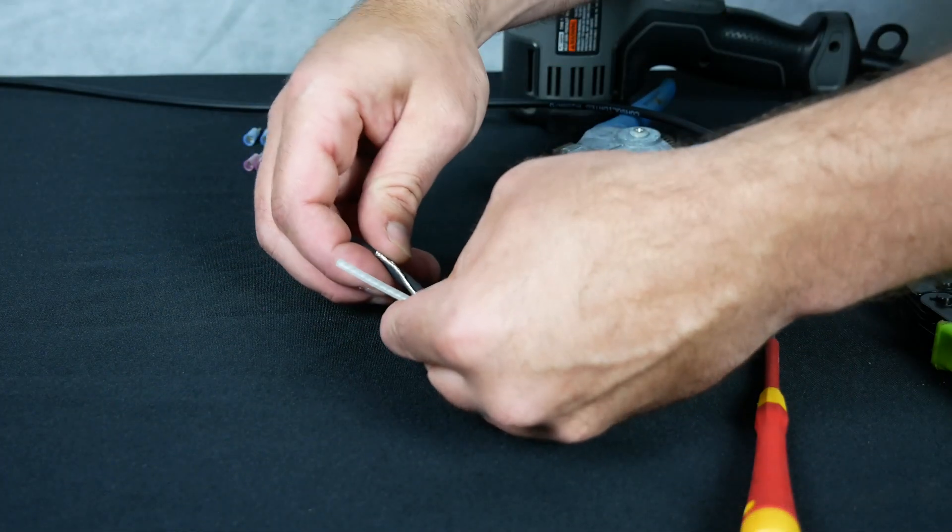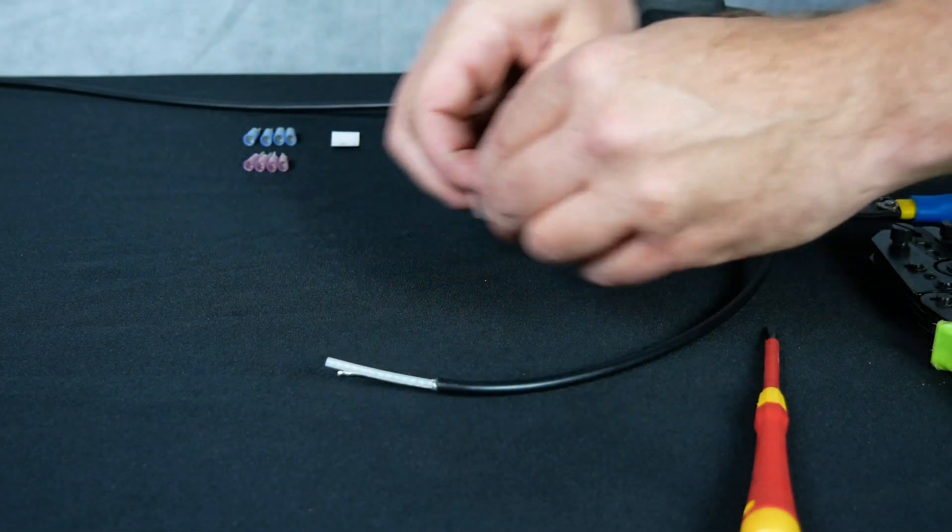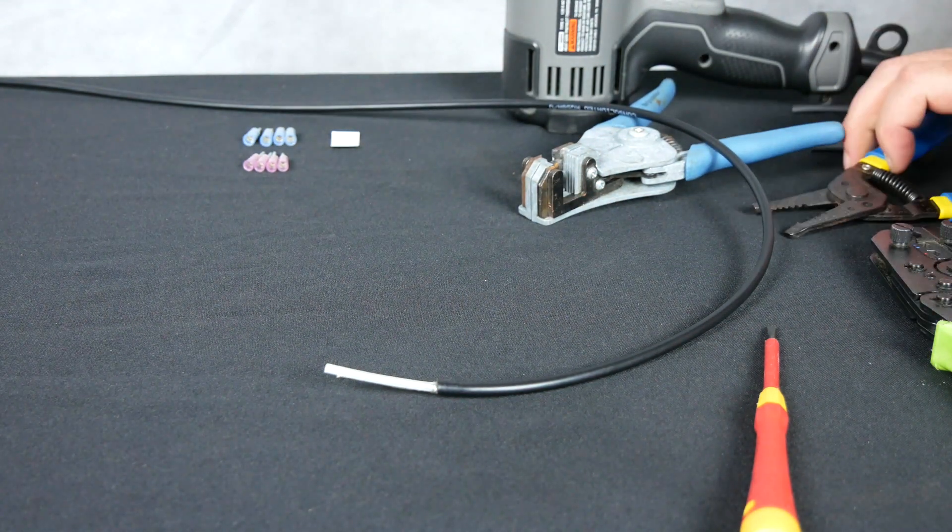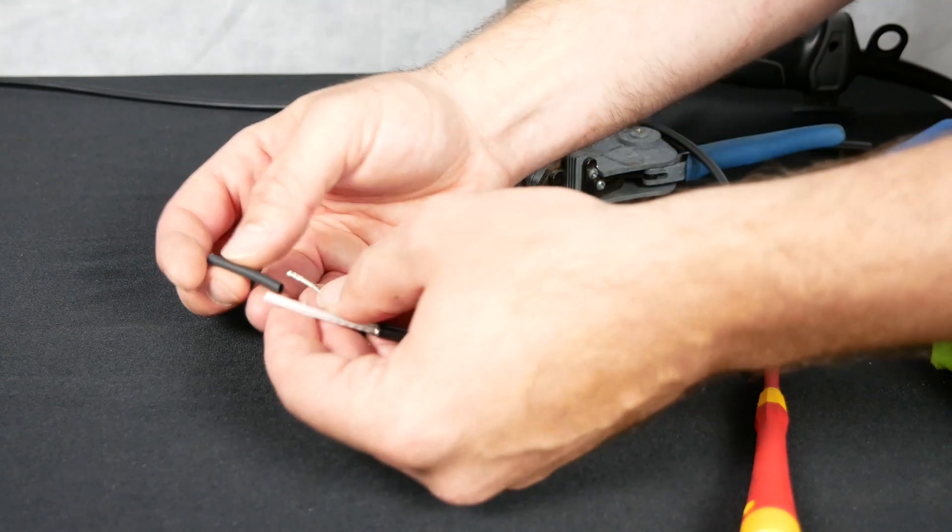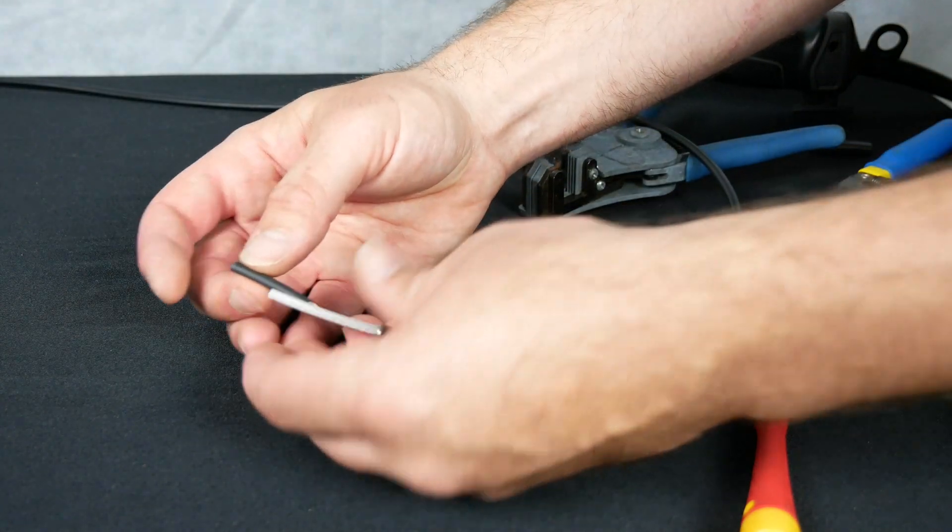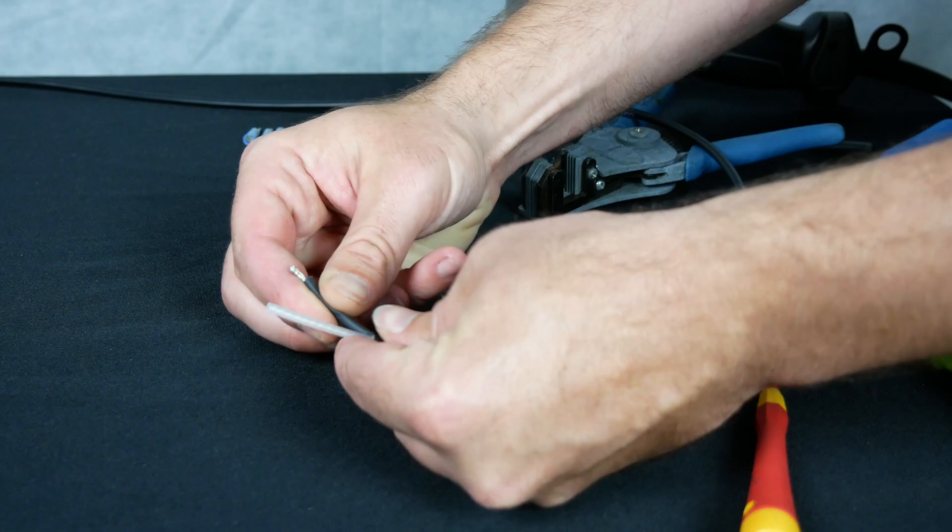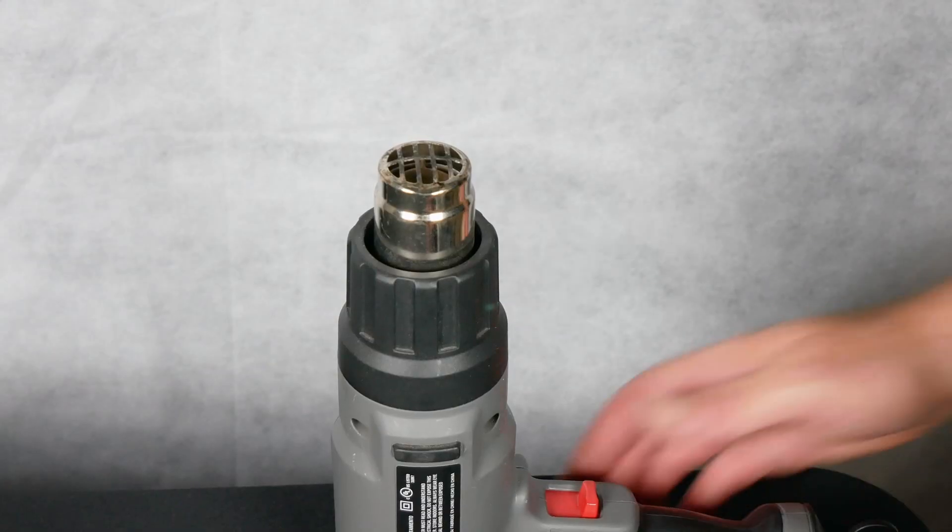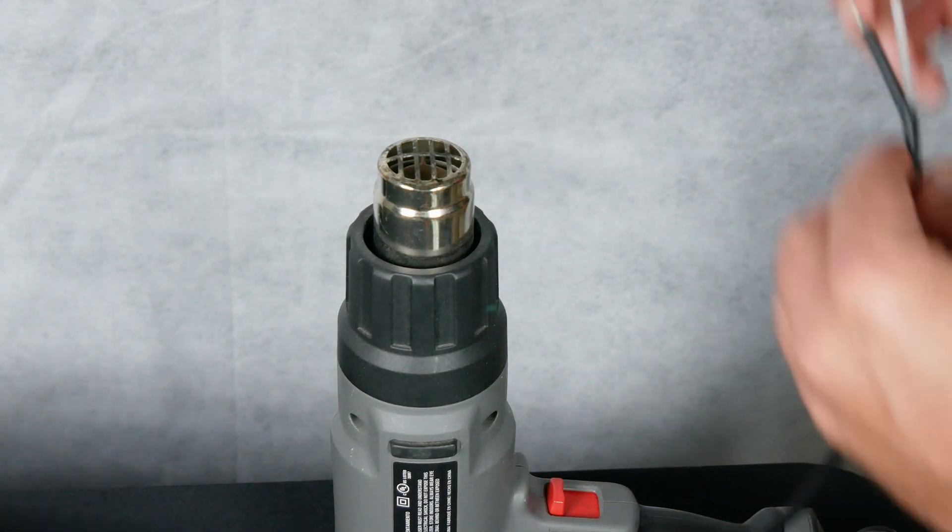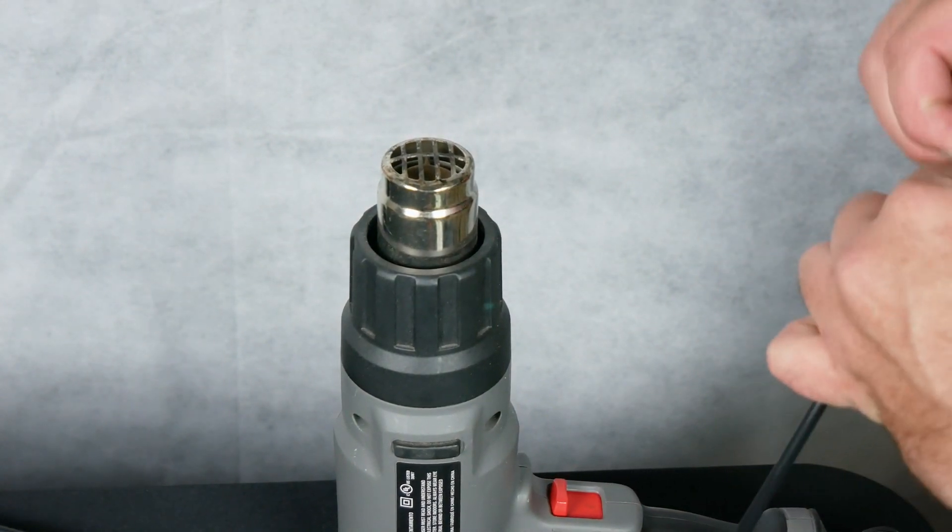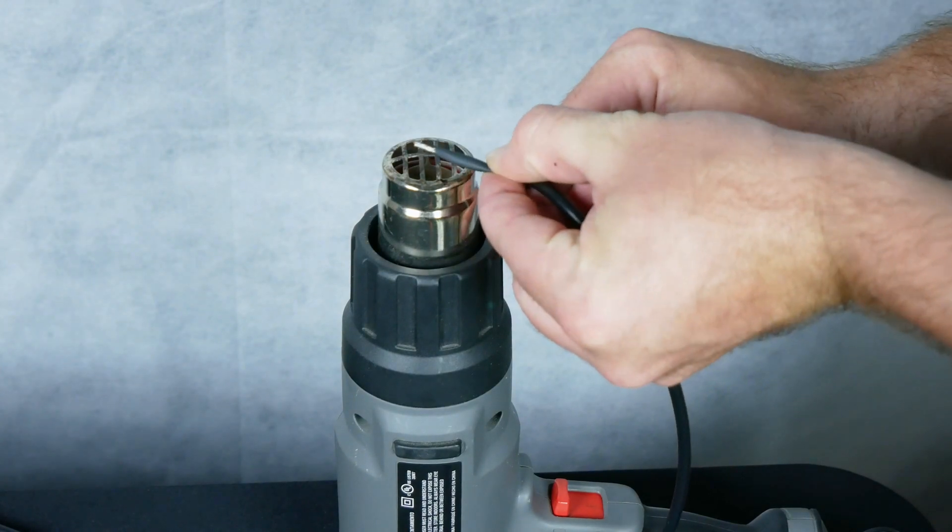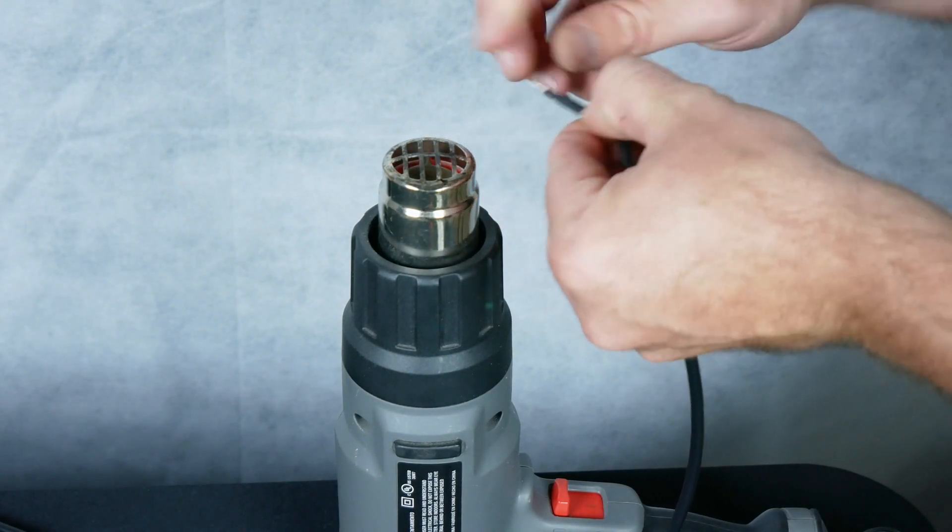Measure, cut, and place a piece of heat shrink tube over the shield wire to help hold it together. After putting your heat shrink over the wire, using your heat gun, shrink the end down. Be careful not to burn yourself while doing this.